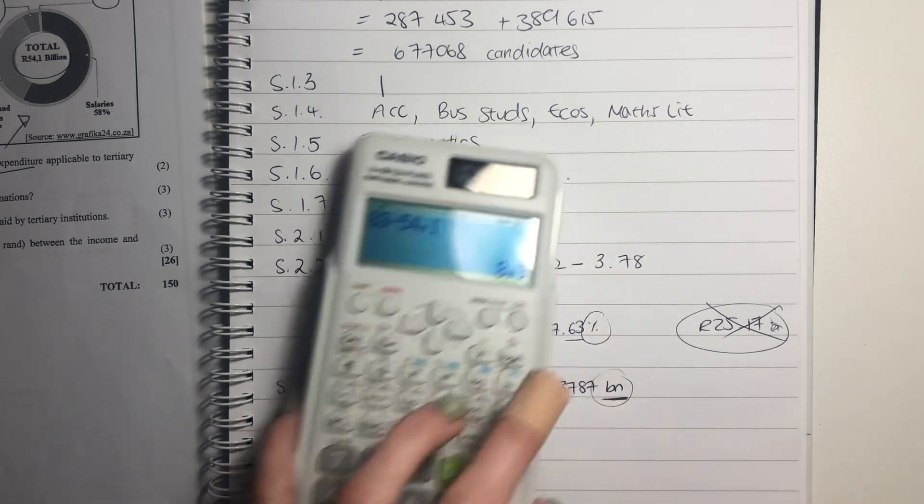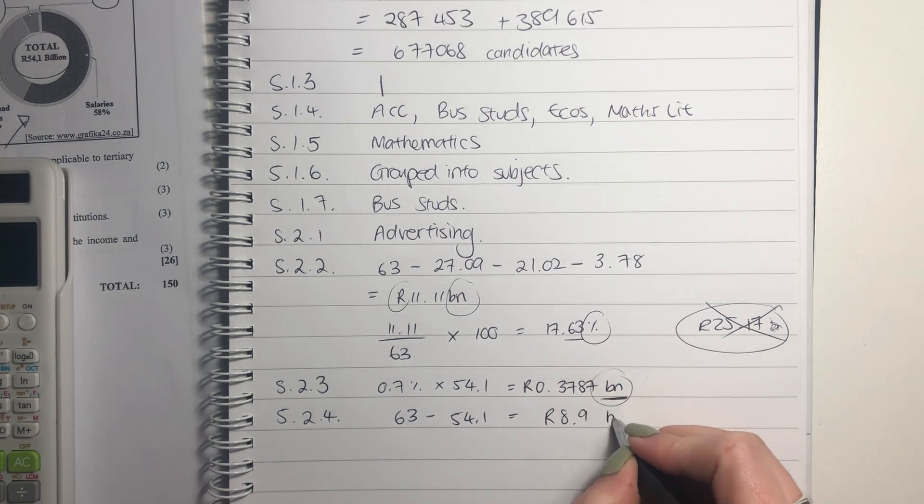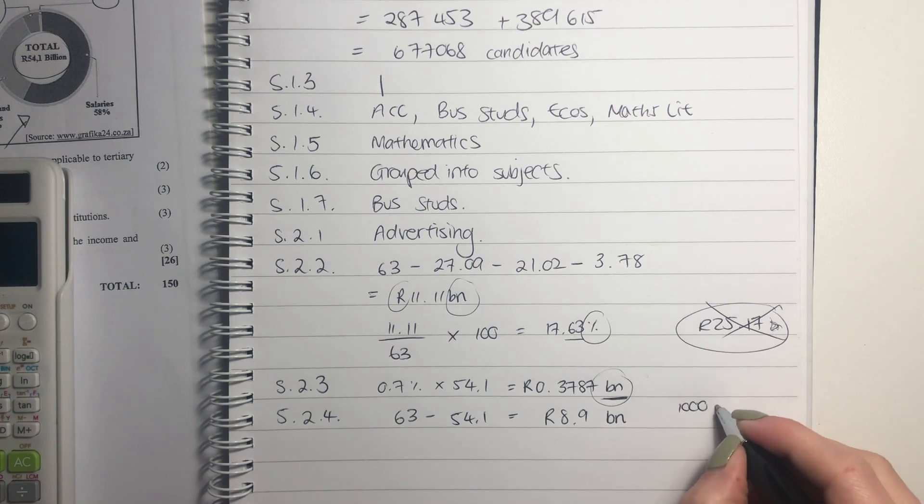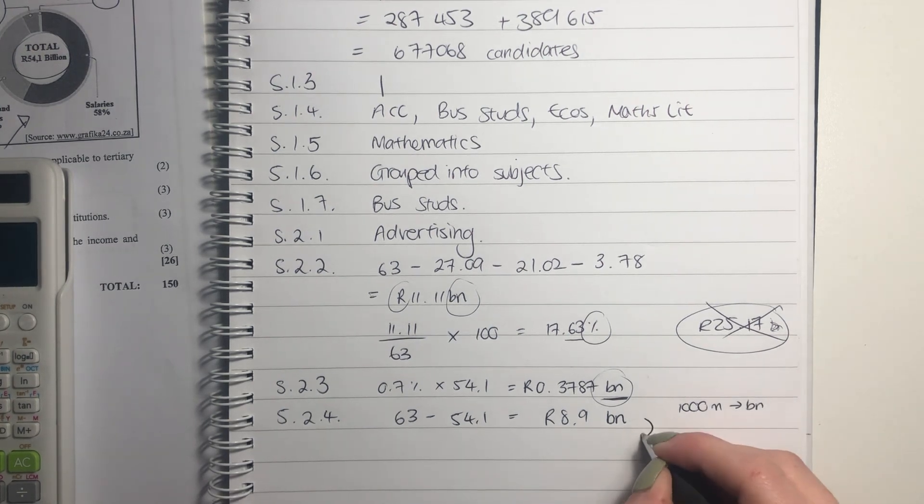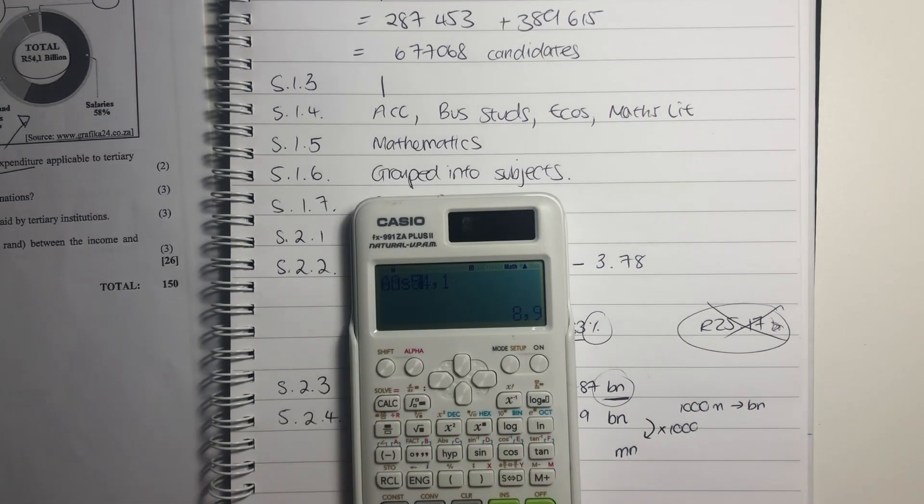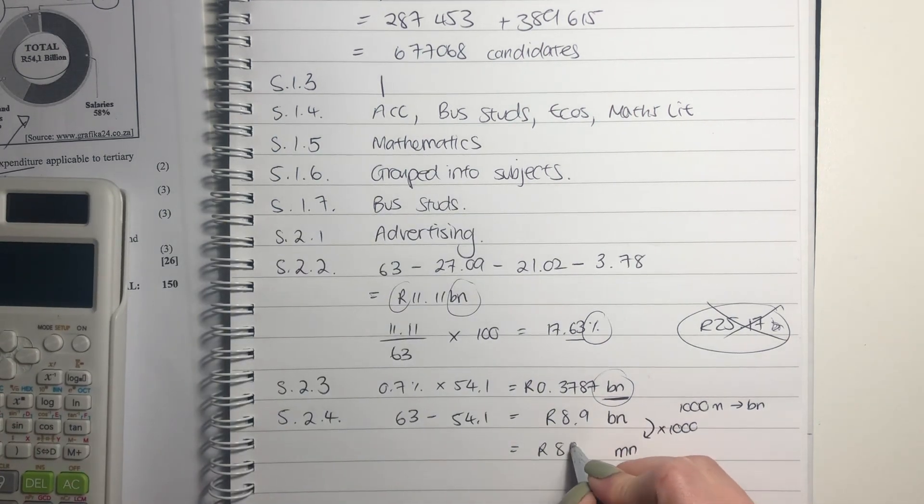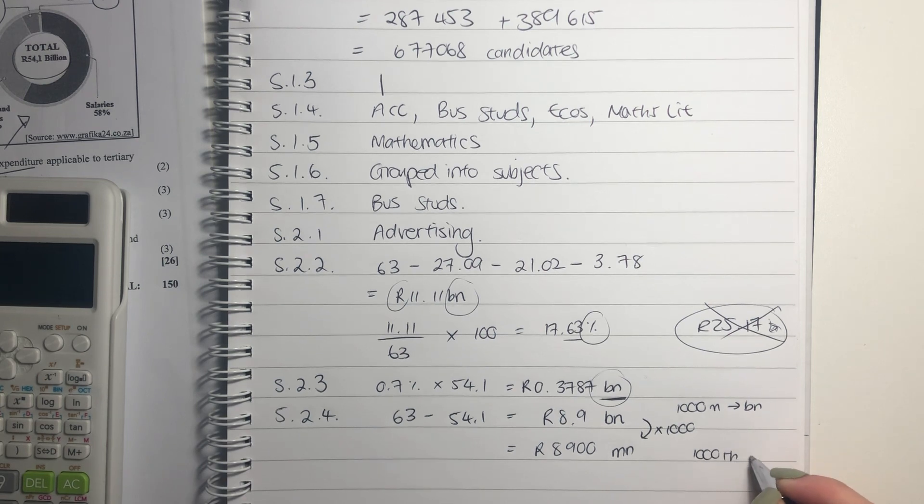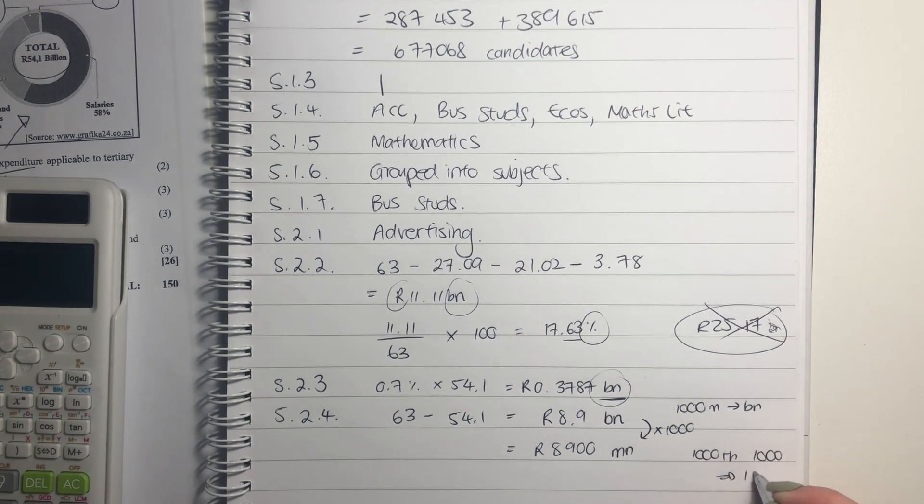Make sure you type that in correctly. So it is 8.9 billion. But they did not ask us to write it in terms of billion. How many millions are there in a billion? There are 1,000 millions in a billion. So I'm going to times this by 1,000 to get it into a million. And it becomes 8,900 million. So just be careful. Remember, there are 1,000 thousands, 1,000 thousands in a million, and then there are 1,000 millions in a billion.